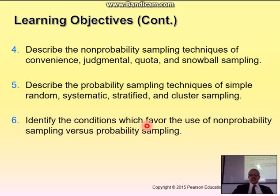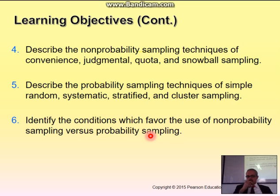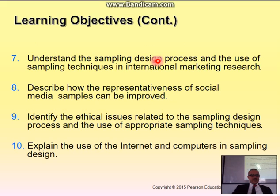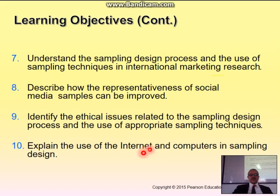We will also identify conditions that favor non-probability sampling versus probability. Generally, probability sampling is preferred because everyone is represented. But there are some conditions where non-probability may be better. We will look at the sampling design process, the use of sampling techniques in international contexts, social media examples, ethical issues, and the use of the internet and computer sampling, as online surveys are becoming very popular for data collection.